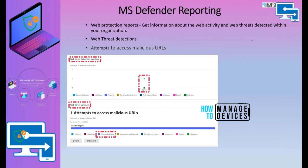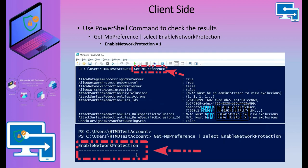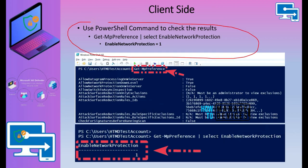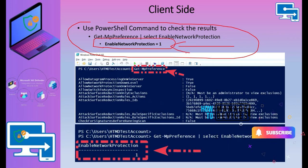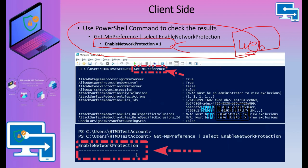There are rich reporting capabilities in Microsoft Defender. You can go to web protection reports to get detailed information about web threat detections, attempts to access malicious URLs, and other web filtering reports. On the client side, you can run a PowerShell command to confirm whether network protection is enabled for a particular device — otherwise web filtering rules won't work.